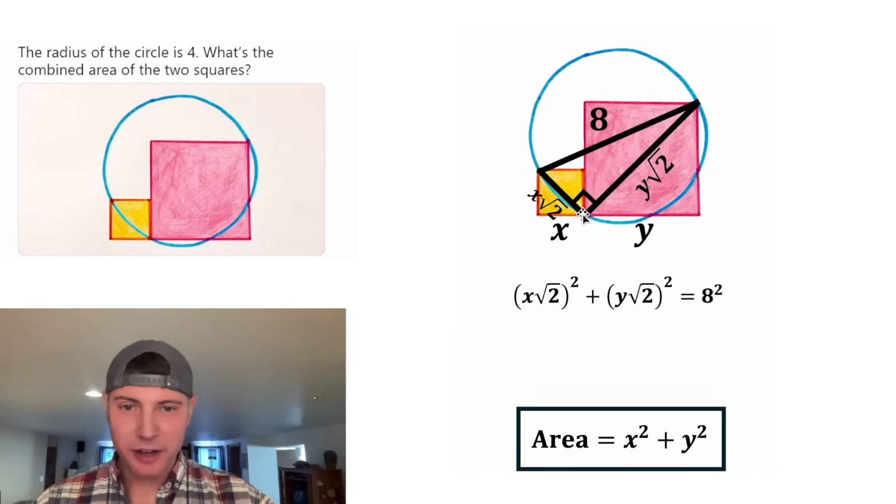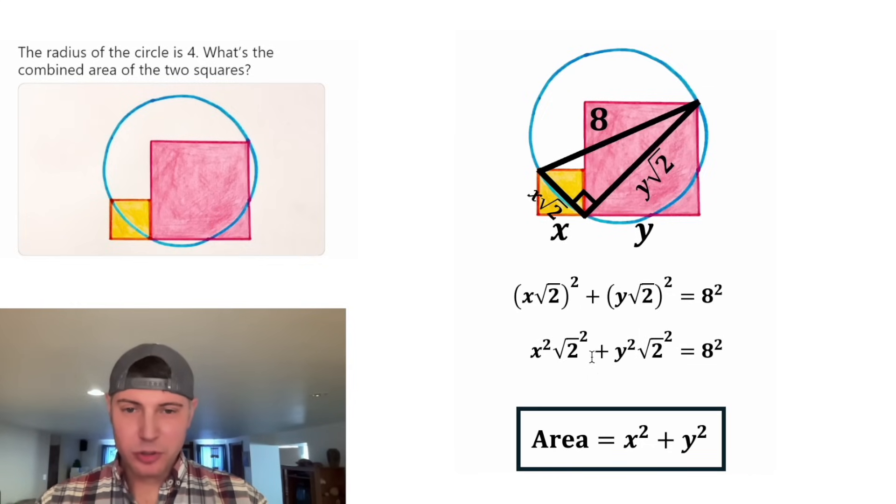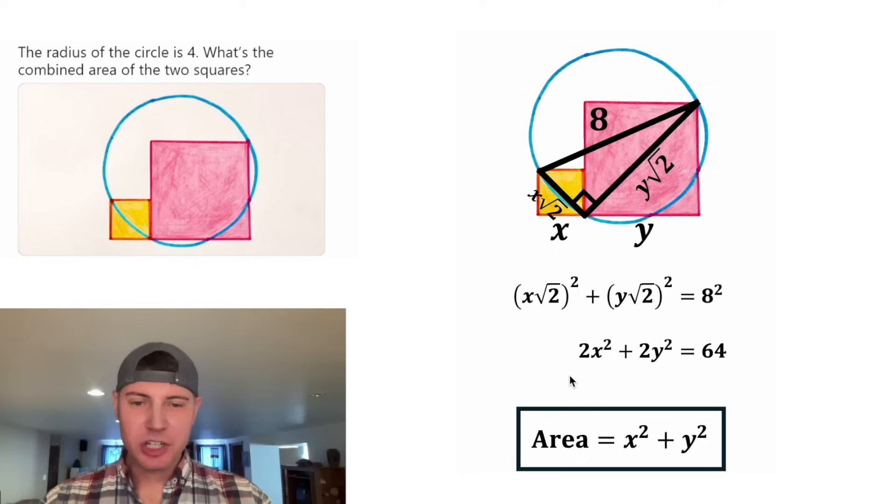It's going to be this side squared plus this side squared equals this side squared. And then from here, this exponent will go to both the x and the radical two, and this exponent will go to both the y and the radical two. And let's copy down the eight squared. This radical two squared is equal to two. This radical two squared is equal to two. And eight squared is equal to 64. Let's smush everything together and then divide both sides by two. These twos will cancel each other out. These twos will cancel each other out. And 64 divided by two is 32.